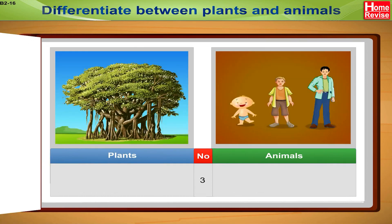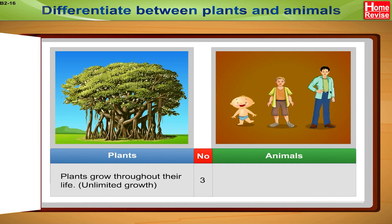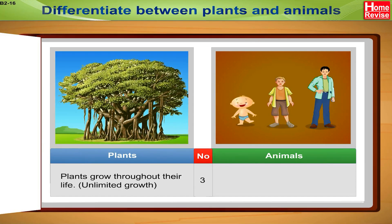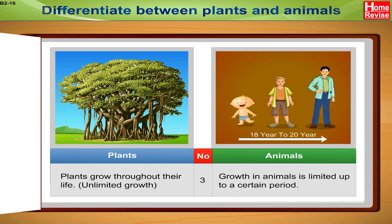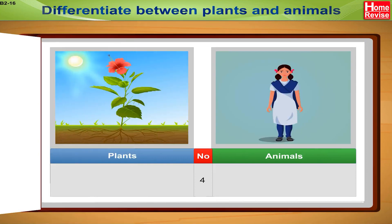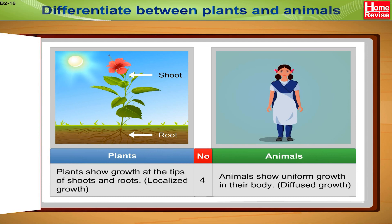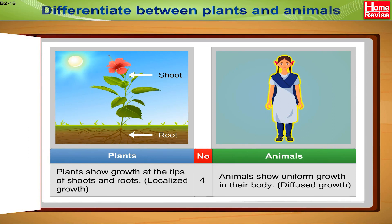3. Plants grow throughout their life, i.e., they have unlimited growth, while growth in animals is limited up to a certain period. 4. Plants show growth at the tips of shoots and roots — it is a localized growth — while animals show uniform growth in their body, called diffused growth.